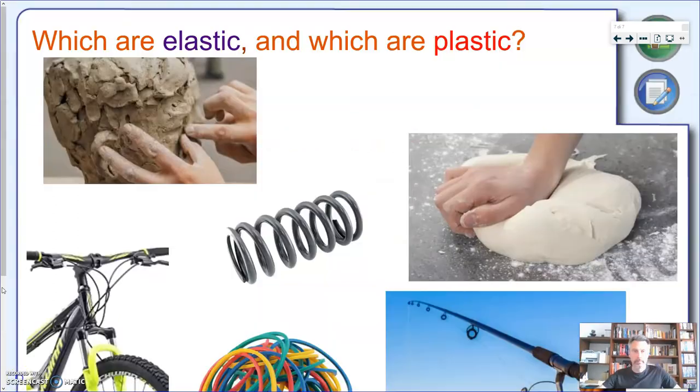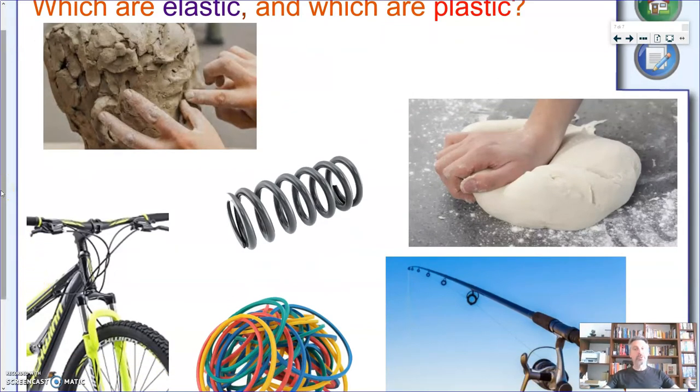So at the end of this very short lesson you should have already an idea of what it means to be elastic and what it means to be plastic. And as you can see here in this slide there are several examples of objects, and some of them have an elastic behavior and some of them have a plastic behavior. What I really want you to do now is to pause this video for a minute, just look at the picture and just try to figure out which of these have an elastic behavior and which of these have a plastic behavior.